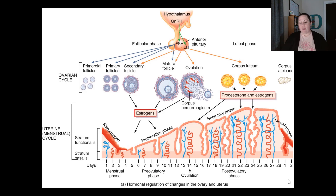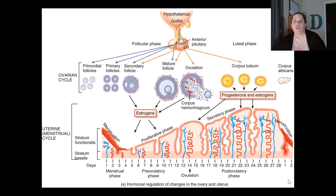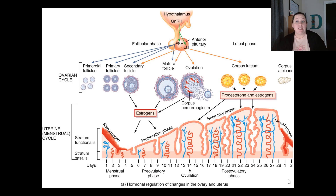Finally, let's briefly discuss the female hormonal cycle. The hypothalamus releases gonadotropin-releasing hormone, which causes the anterior pituitary to release follicle-stimulating hormone (FSH) and LH at different stages. There is an ovarian cycle where the egg is released through ovulation halfway through the month, and a uterine or menstrual cycle that takes place inside the uterus. These many factors involved in the monthly cycle in females lead to some of the problems we will discuss in the next lecture.